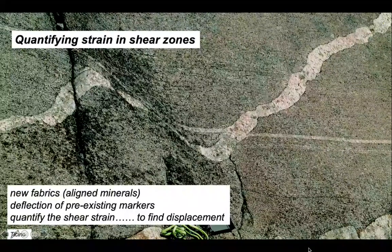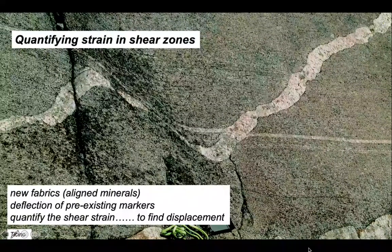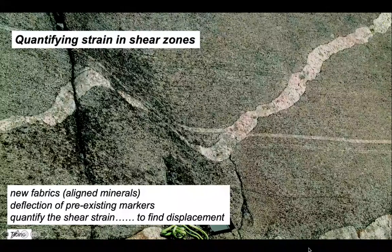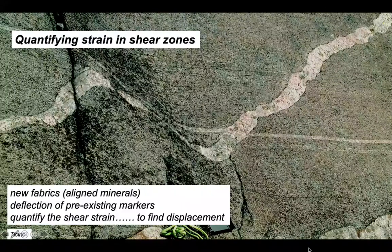The strain can be charted using the orientation of the shape fabrics created during shearing, and also by the orientations of pre-existing markers as they deflate in and out of shear zones. And if we quantify shear strain across a shear zone, we can then calculate the shear zone's displacement.